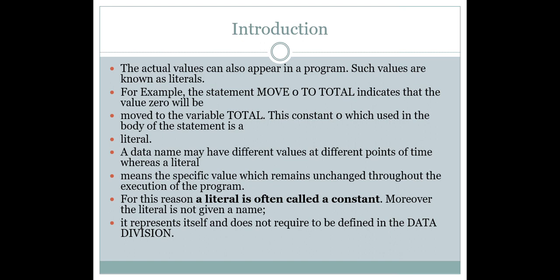Suppose we are going to use a data name — initially you could give some value, and for further future executions you could change the value of the data name. But at the same time, suppose the data name is going to act like a literal, then the values given couldn't be changed for any number of executions. This type of property we call literals. Sometimes literals are often called constants. The difference is that a literal is not given a name — it represents itself and does not require to be defined under the Data Division.